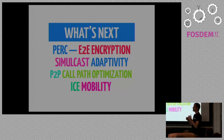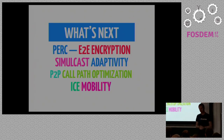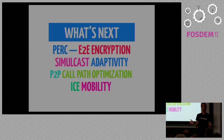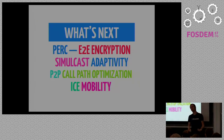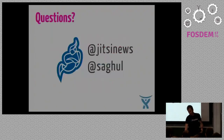We're also working on an optimization for when you are calling one-on-one. When you're just two participants, we'll try to bypass the bridge and have a direct connection between us if we can do that without any TURN service. If it's possible we'll go one-on-one, but when a third person joins we'll go to the bridge so that we work together. We're also doing some work in ICE mobility - basically, if the connection changes, we need to survive and continue the call without being disrupted. And of course, our mobile application efforts are also in full swing.